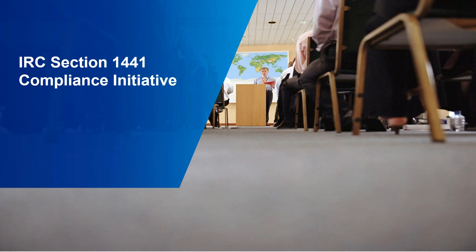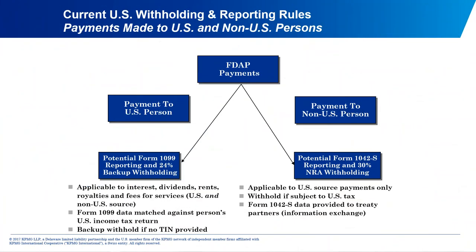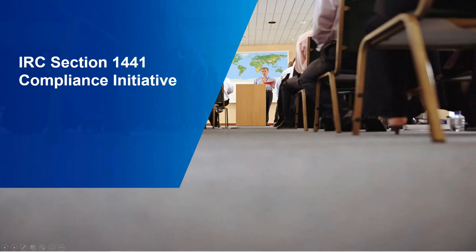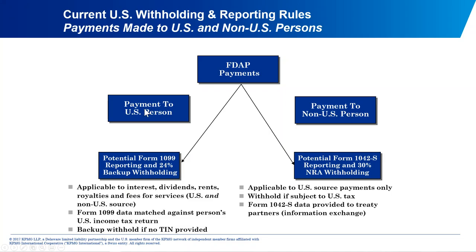Let's jump into 1441 withholding in general. FDAP payments — fixed, determinable, annual, or periodical income — are the focus. For payments going to a U.S. person, you have a requirement to get a tax ID. In certain cases it needs to be provided on a W-9 form under penalties of perjury. If you don't get the tax ID prior to making the payment, there is a 24% backup withholding required. The reporting for that would be on Form 1099-MISC for vendor payments. The IRS matches that 1099 with the vendor's tax return to make sure they're properly reporting income and paying tax.